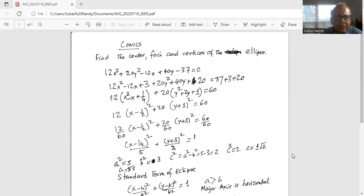So from the first three terms, I take out 12. So I get 12x square minus x plus 1 over 4. Why 1 over 4? Because 12 divided by 4 is 3.